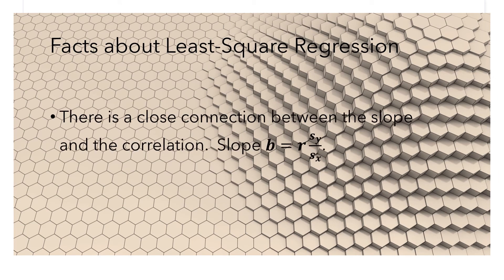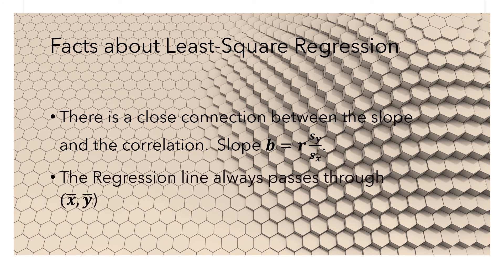These are the facts about the least squares regression line. There is a close connection between the slope and the correlation coefficient, because the slope is the coefficient times the quotient of the standard deviations sy and sx. Also, the regression line always passes through the point x-bar, y-bar, meaning x-bar and y-bar will satisfy that equation.